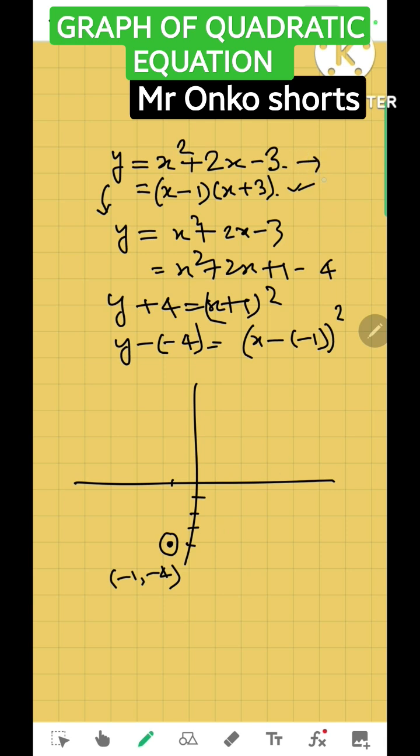If x = 0, then y = -3, so this is the point where it will intersect the y-axis. The x-intercepts are at x = 1 and x = -3. These are the points through which the graph will pass.